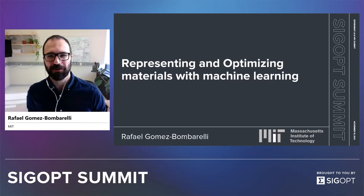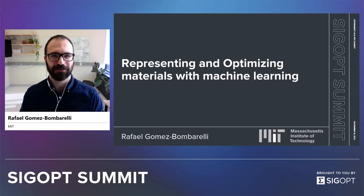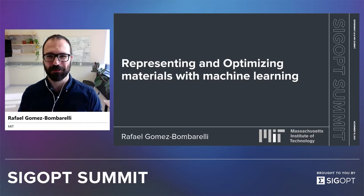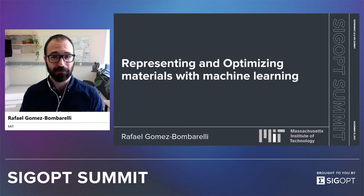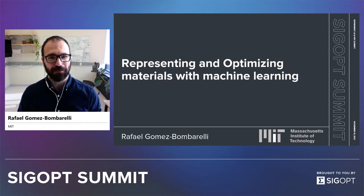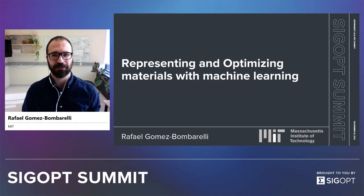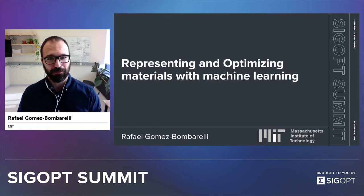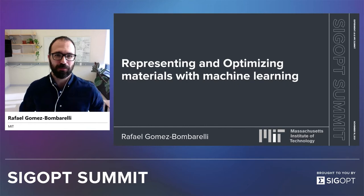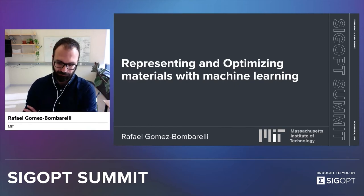Thanks so much for having me. My name is Rafa Gómez-Bombarelli. I'm an assistant professor in material science at MIT. My talk today is about the work we do in representing and optimizing materials with machine learning, and about how hyperparameter optimization has become a key part of what we do.